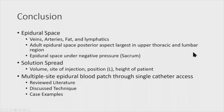In conclusion, the epidural space is made up of veins, arteries, fat, and lymphatics. The posterior aspect is largest in the upper thoracic and lumbar regions. The epidural space is under negative pressure except in the sacrum. Spread of solution depends on volume, site of injection, and patient position — lateral decubitus produces greater spread — and is inversely correlated with patient height. The multi-site epidural blood patch through a single catheter access has limited but growing literature. I discussed our technique and presented two case examples.